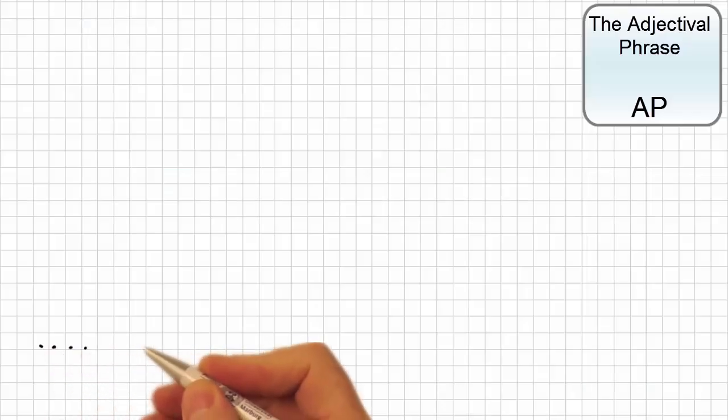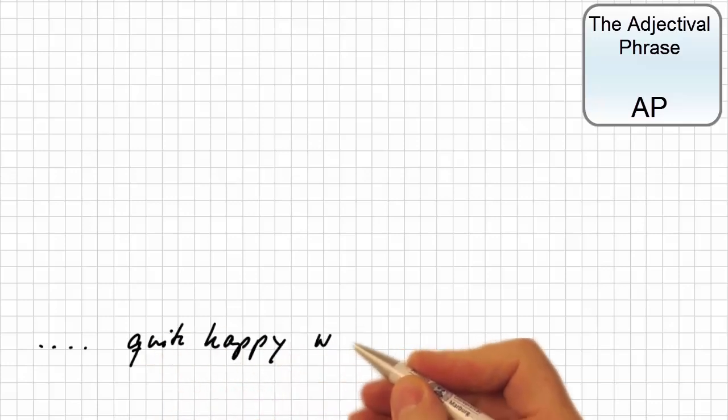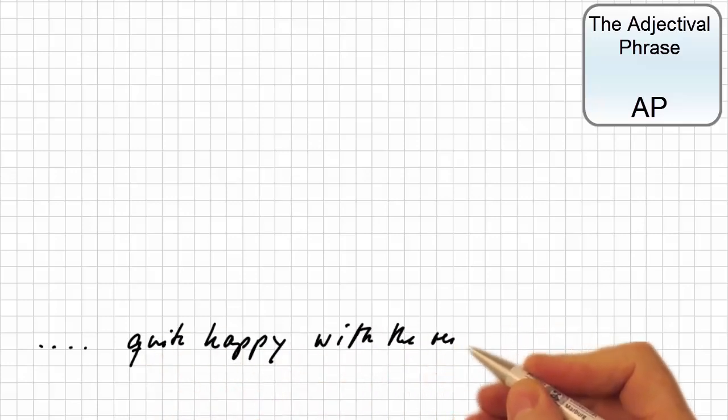In order to understand the structure of the adjectival phrase, let us deal with the construction quite happy with the results.